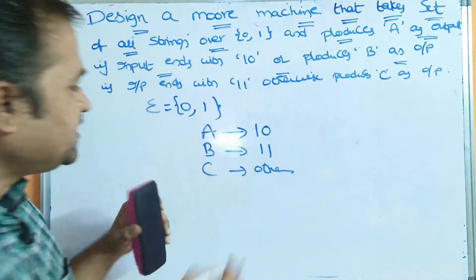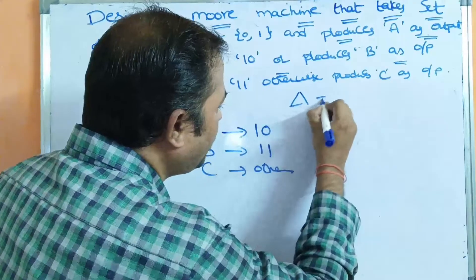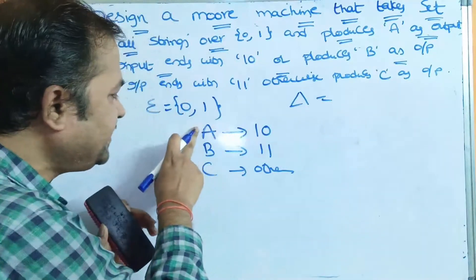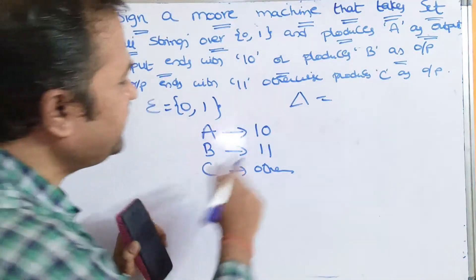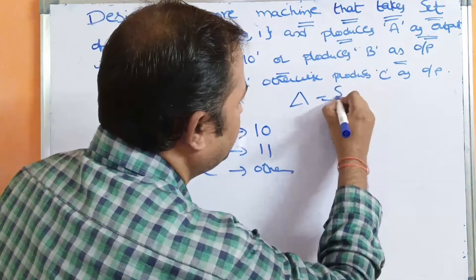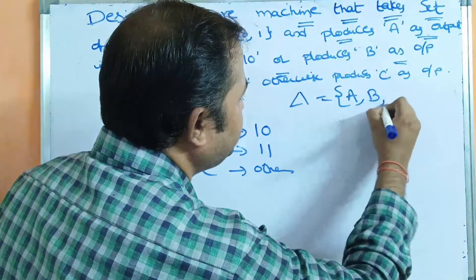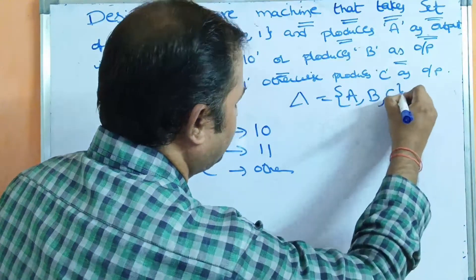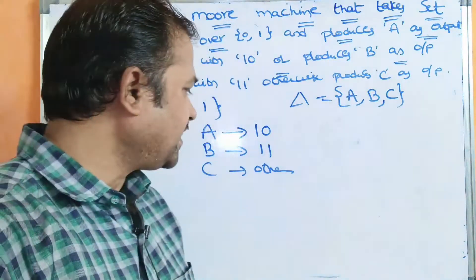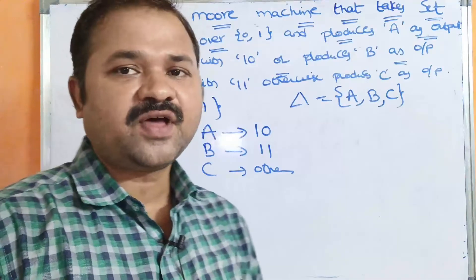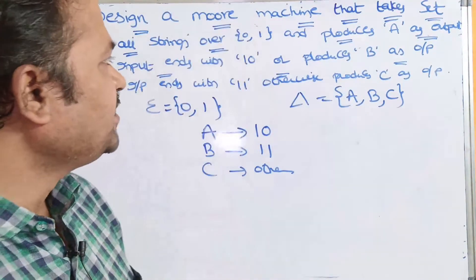So here, what is the output alphabet? The output alphabet mainly contains 3 letters: A, B, C. So delta is equal to {A, B, C}.